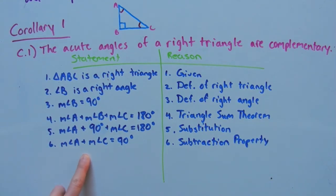And look, the measure of angle A plus the measure of angle C equals 90 degrees. And if the measures of two angles add to equal 90 degrees, then those angles are complementary. And that's by the definition of complementary angles.